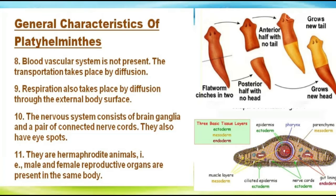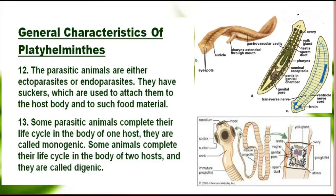They also have eye spots. They are hermaphrodite animals, meaning male and female reproductive organs are present in the same body. The parasitic animals are either ectoparasites or endoparasites. They have suckers which are used to attach to the host body and absorb food. Some parasitic animals complete their life cycle in the body of one host and are called monogenic; others complete it in two hosts and are called digenic.